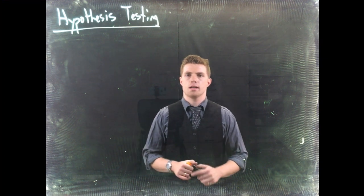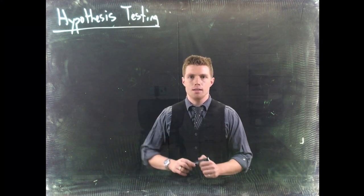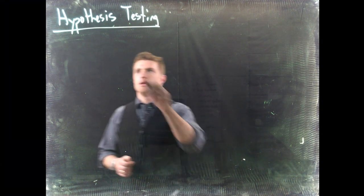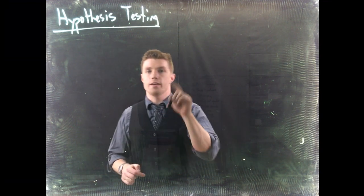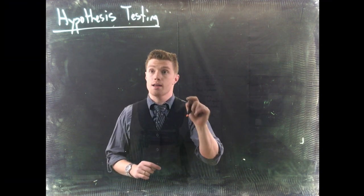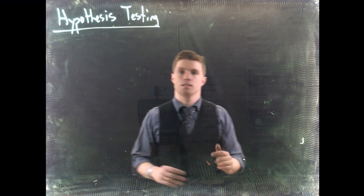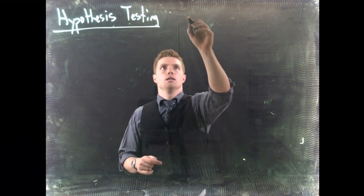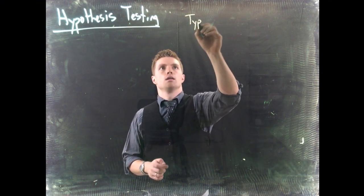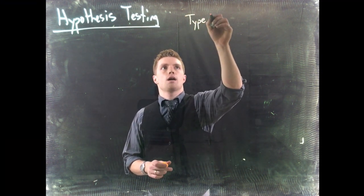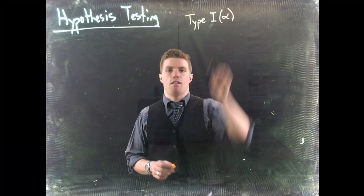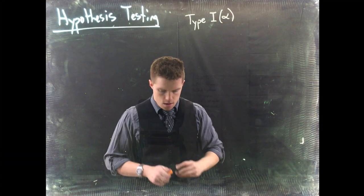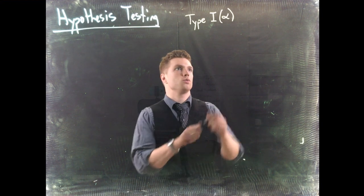Let's talk a bit more about Type 1 and Type 2 errors. We'll do a quick review of what a Type 1 error is, and then dive into Type 2. So Type 1 error — remember this is alpha — let's draw it real quick.